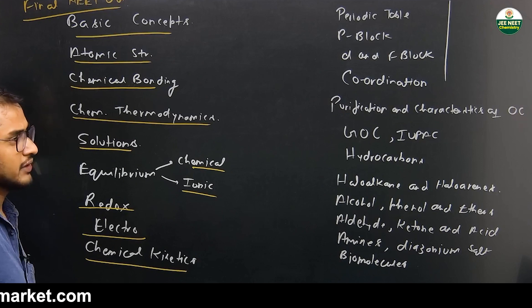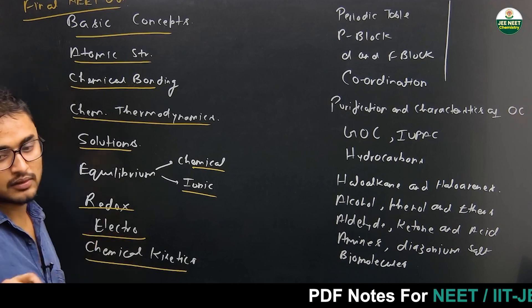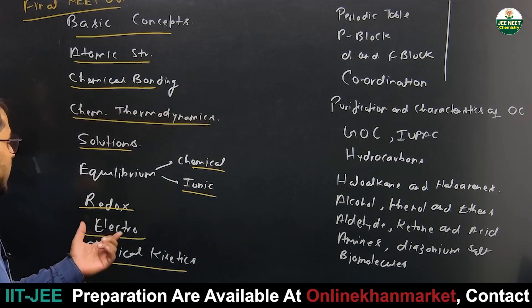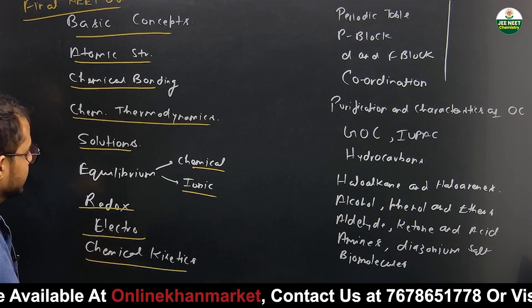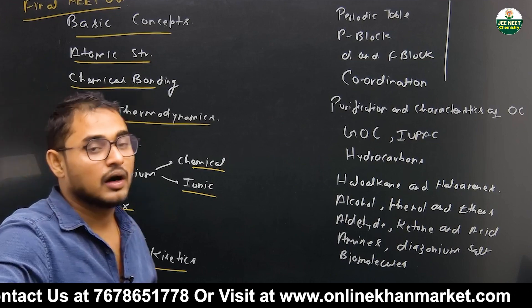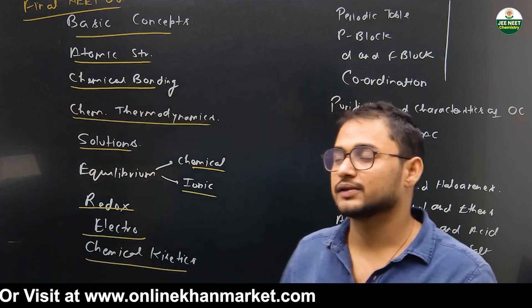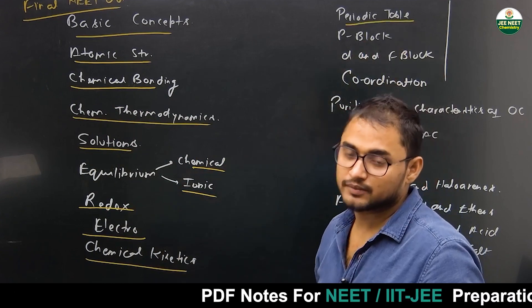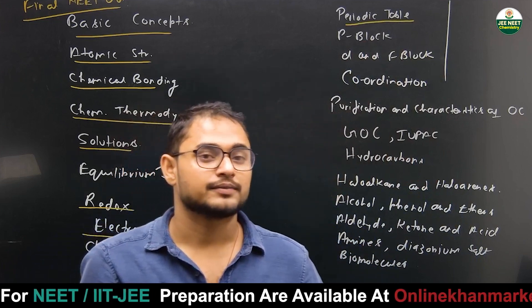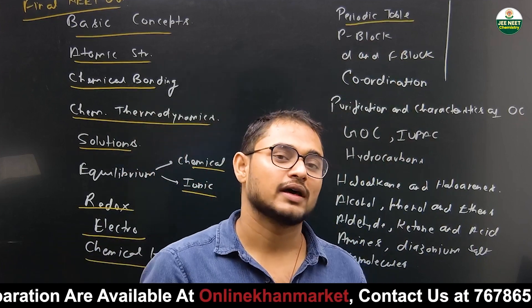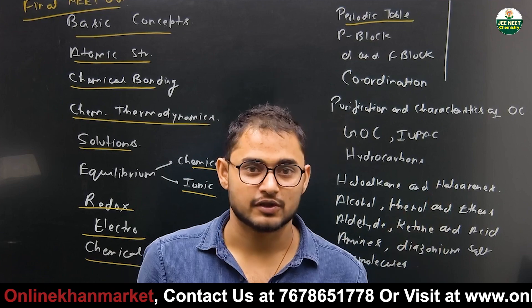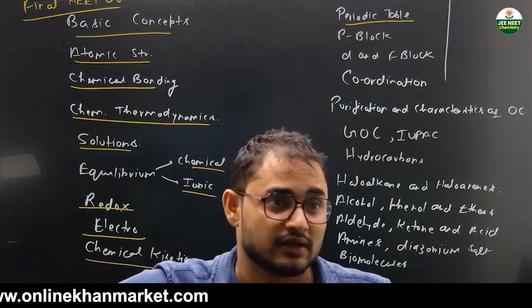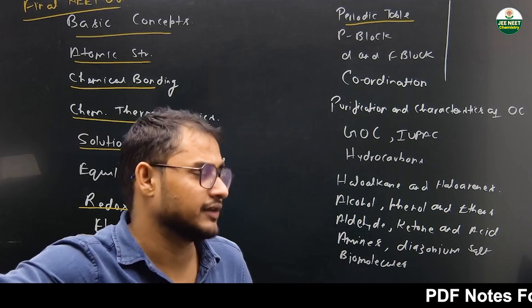Redox reactions — including oxidation number and balancing equations — are there. Electrochemistry covers the galvanic cell, voltaic cell, balancing equations, and Faraday's laws. Chemical Kinetics includes first order and second order reactions and the Arrhenius equation, etc. All are there. Then, the Periodic Table — nomenclature of elements with atomic number greater than 100, properties of S, P, D, F block elements, and physical properties like atomic size, electronegativity, and electron gain enthalpy — all are in your syllabus.